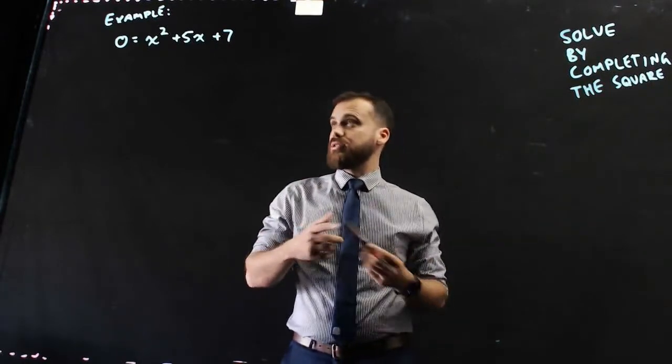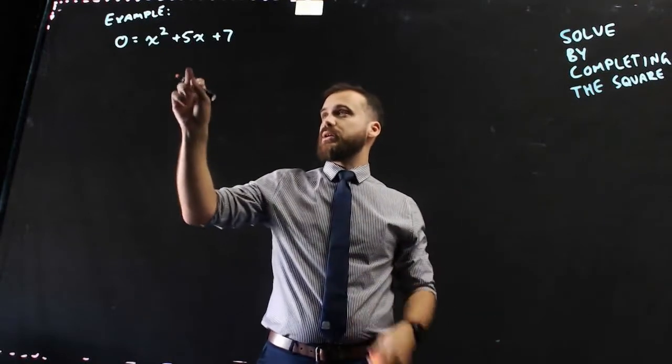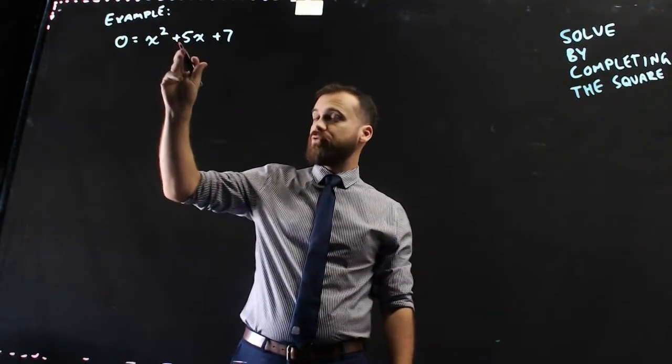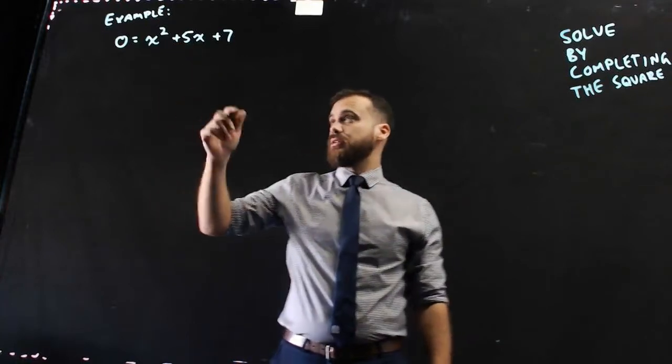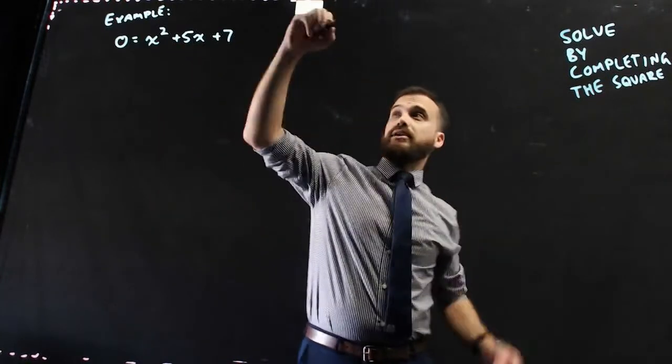So, let's try completing the square. Step one when you complete the square is to find your magic number, that's half of the b value squared. So, I'll do a little magic number calculation up here.